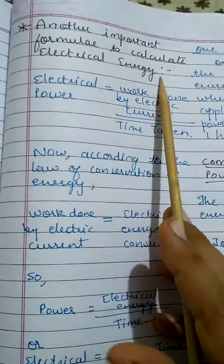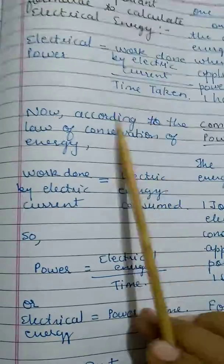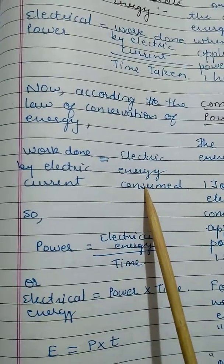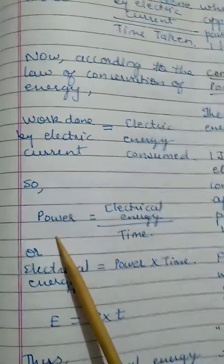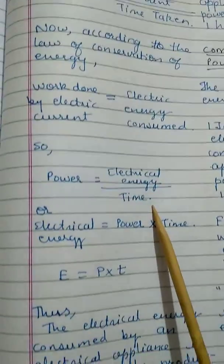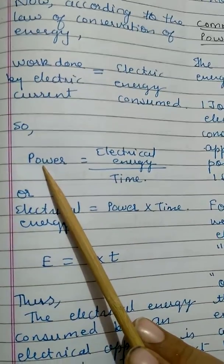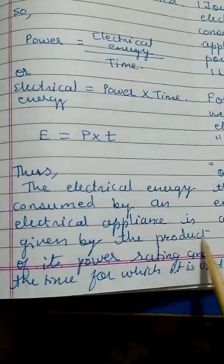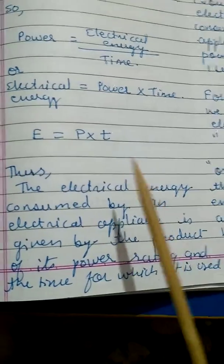Now, another important formula to calculate electrical energy: electrical power equals work done by electric current upon time taken. According to the law of conservation of energy, work done by electric current equals electrical energy consumed. So power equals electrical energy upon time, or electrical energy E equals power P into time T.